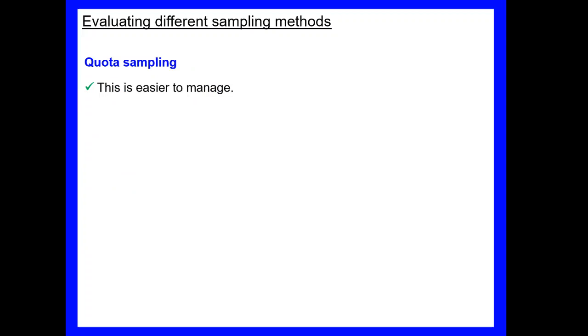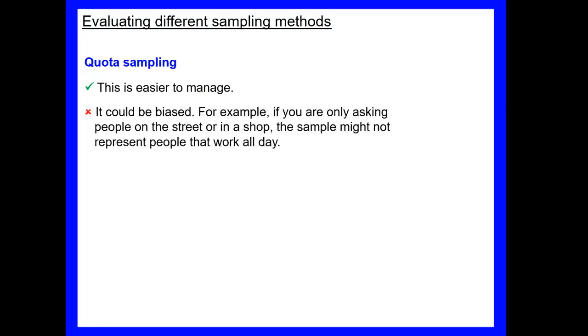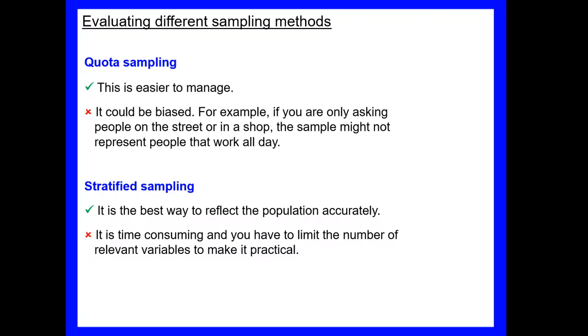Quota sampling is easier to manage, so if we're just choosing an amount of people to ask from each group, then as soon as we hit that target we know we are there. But it could be biased, okay? So if we're only asking people on the street or in a shop, the sample might not represent all the people. So you'll often see people perhaps in the town center stopping people asking questions. Now obviously if they're in the town center in the middle of the day stopping people, there's a good chance the only people they're going to stop are people who are not at work, so perhaps elderly people or people with young children who are at home. That doesn't give them a representative of the entire population. So stratified sampling then is the best way to reflect the population accurately, but it is time consuming and you have to limit the number in your sample to make it practical. So you can see there are pros and cons for each of those different sampling methods.